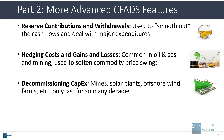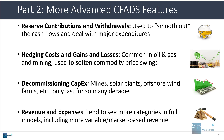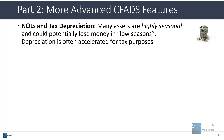You could have decommissioning CapEx — mines, solar plants, offshore wind farms, even fossil fuel plants only last for so many decades before they need to be brought offline and disposed of. With revenue and expenses, you could see more categories in full models — some revenue locked in at an agreed-upon rate, other revenue depending on market rates. You could also have net operating losses and tax depreciation, as some assets lose money in low season and turn very profitable in high season.